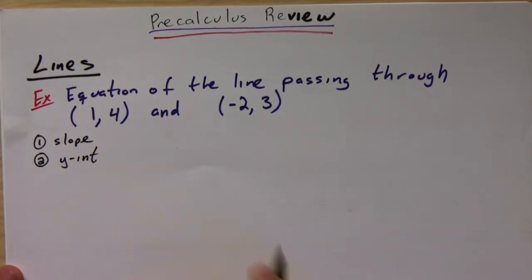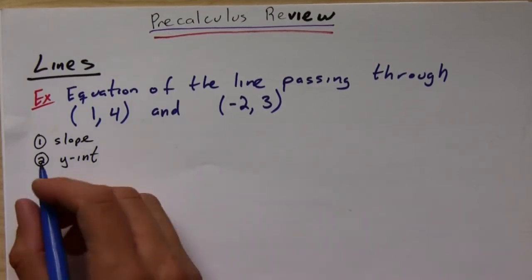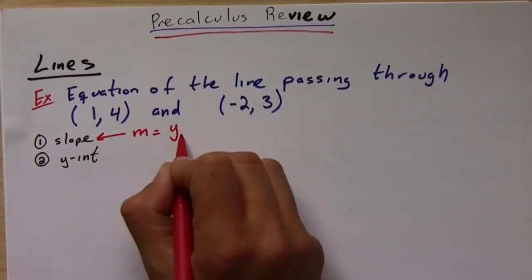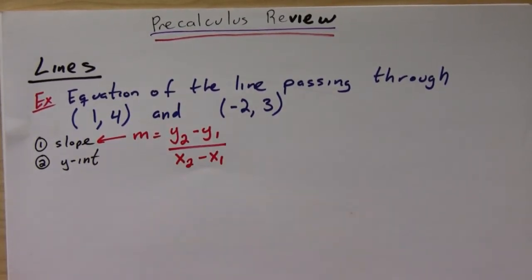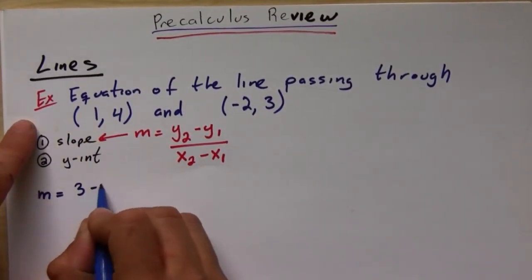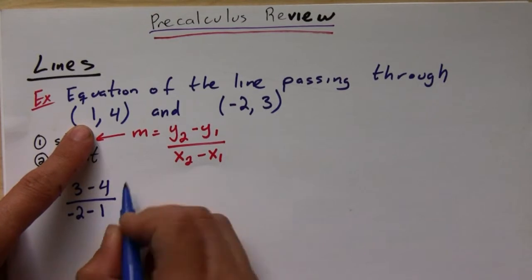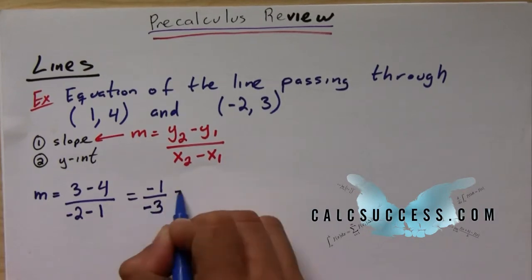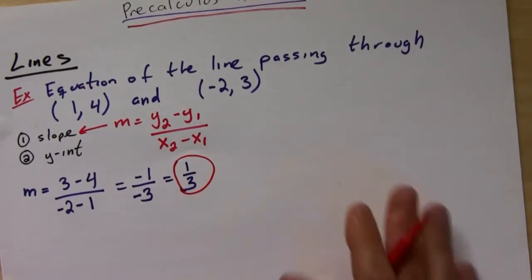So here, since we have two points, we know that the slope is equal to the difference in the y values divided by the difference in the x values. So that means my slope, if I subtract these, I'm going to get (3-4) over (-2-1). So I get -1 over -3, which is positive 1/3. And so this is my slope.